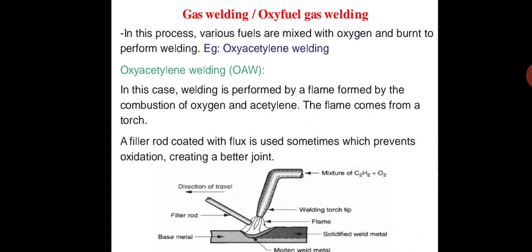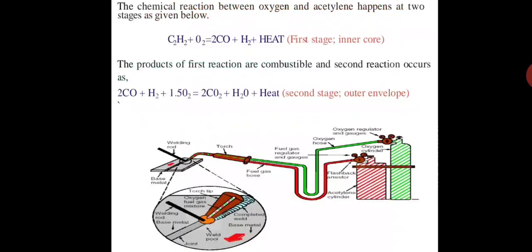As we can see in the figure, there is a base material, weld metal, and the torch where a mixture of oxygen and acetylene is being passed and the flame at the torch tip. The molten pool is generally supplied with additional metal called filler, which prevents oxidation and creates a better joint. The selection of filler material depends upon the metal to be welded.